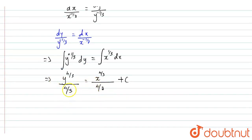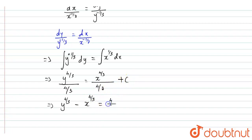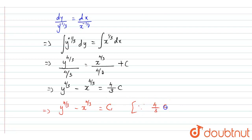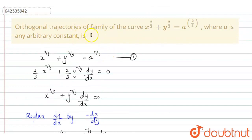Taking the common denominator to the right-hand side and taking LCM, we get y^(4/3) - x^(4/3) = (4/3)C. I'm going to put this as y^(4/3) - x^(4/3) = C1, where 4/3 · C = C1. So this is the final equation obtained by solving. Thank you, students.